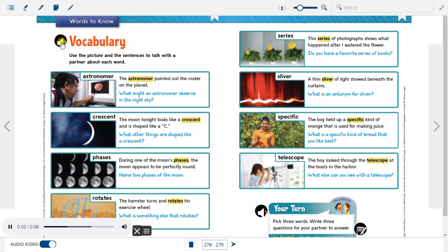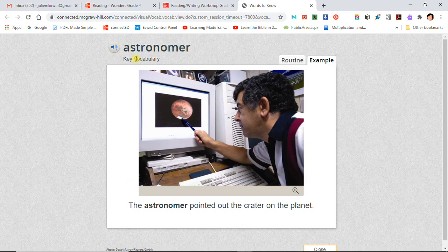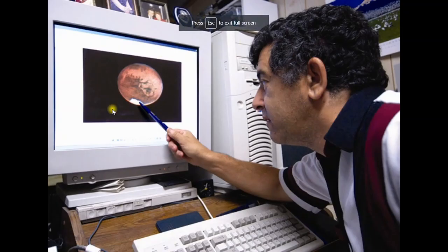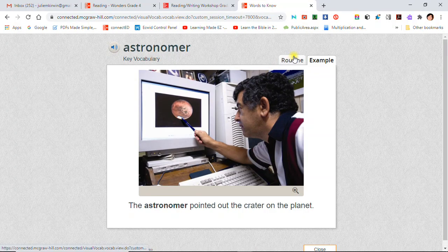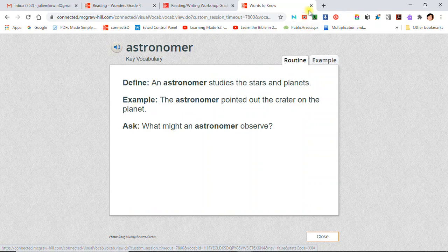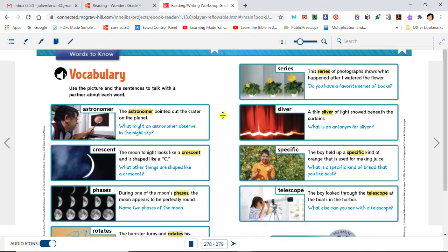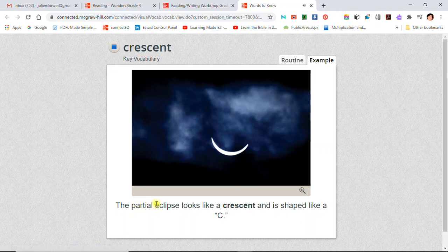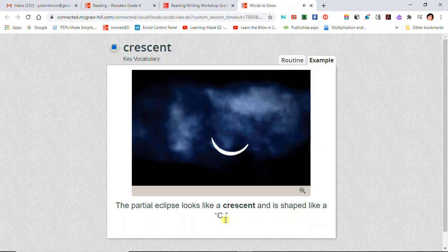Vocabulary. Use the picture and the sentences to talk with a partner about each word. Astronomer: The astronomer pointed out the crater on the planet. Crescent: The partial eclipse looks like a crescent and is shaped like a C.